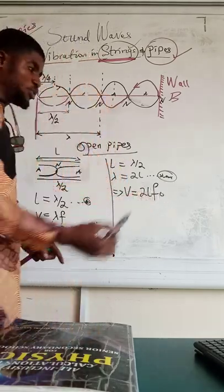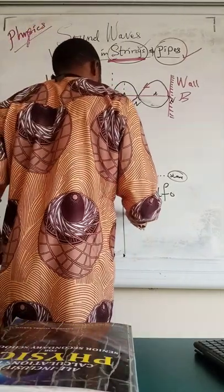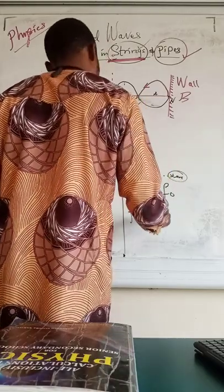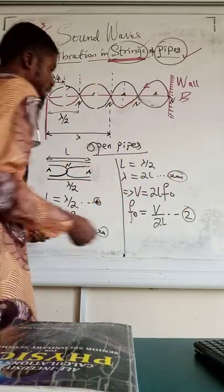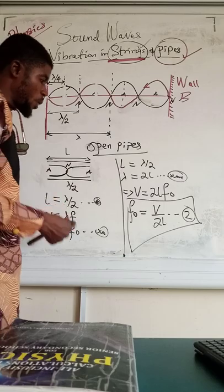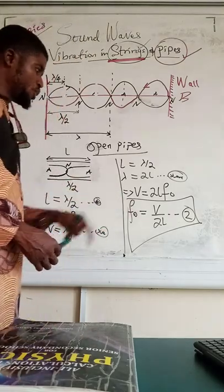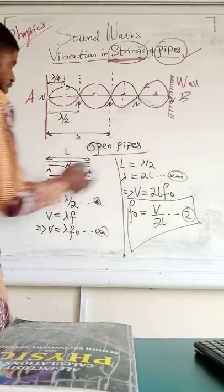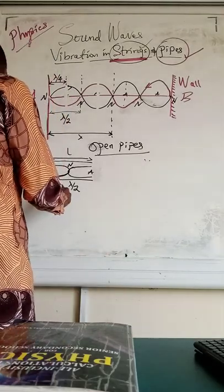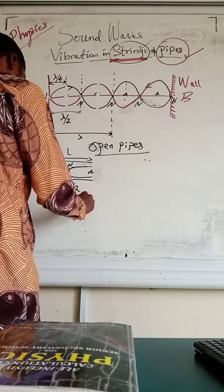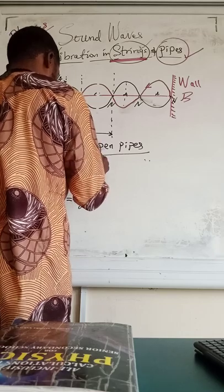Making f₀ the subject of the formula, we get F₀ = V / 2L. This is equation number 2. You can see that everything we did for string instruments is the same for open pipes. The fundamental frequency for an open pipe is F₀ = V / 2L.